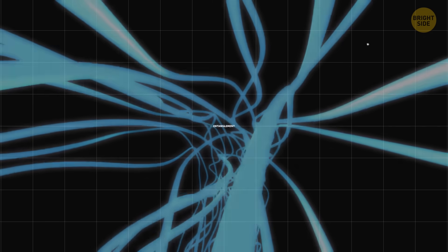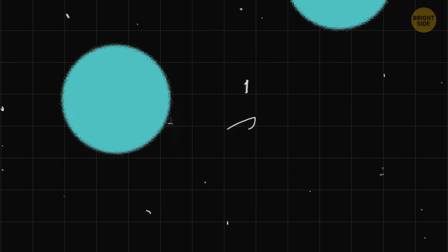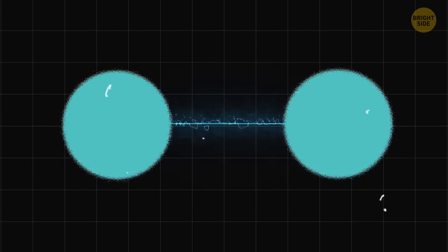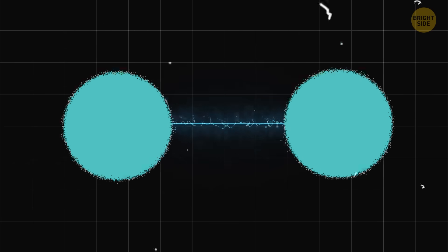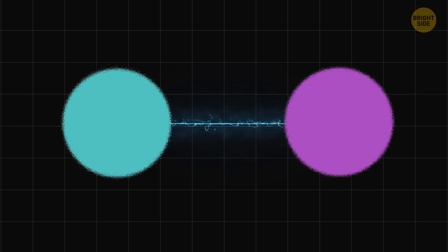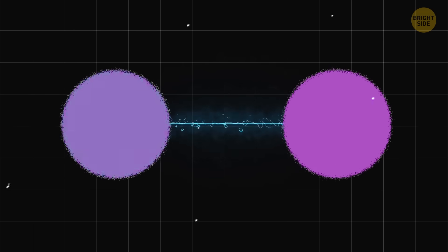The second thing is entanglement. Scientists take two particles and entangle them together. This means that they are now connected. If a certain action occurs with one particle, then the same action occurs instantly with the other.